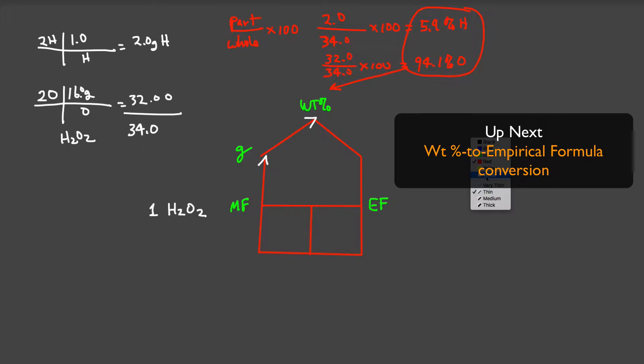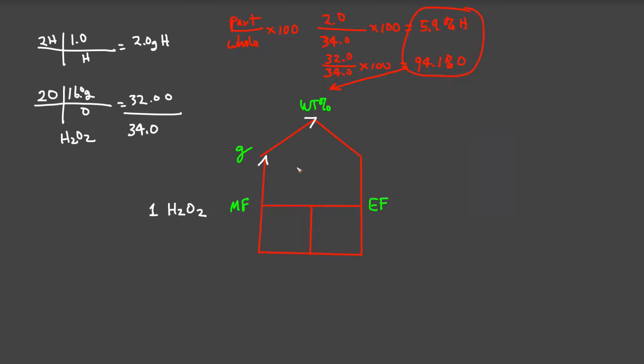Let us now consider the next type of problem: what if we're given a weight percent and need to determine the formula. The first thing we do is convert weight percent to an empirical formula. To go from weight percent we first convert percent to grams using a simple device: we assume that we have a 100 gram sample. This allows us to merely replace the percent sign with grams. 5.9 percent of 100 grams is 5.9 grams, and 94.1 percent is 94.1 grams.